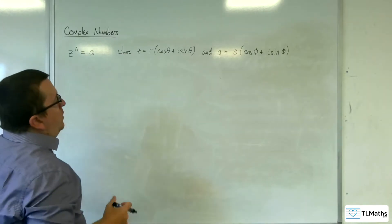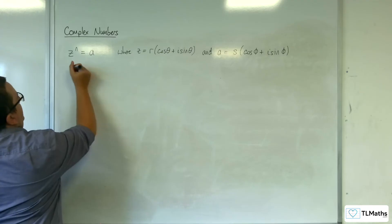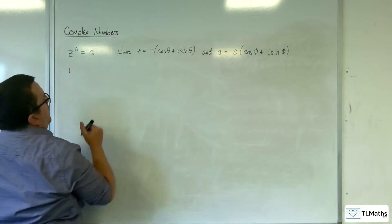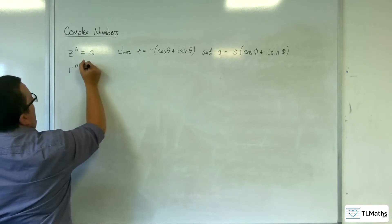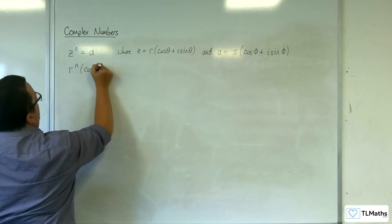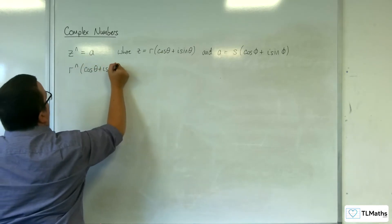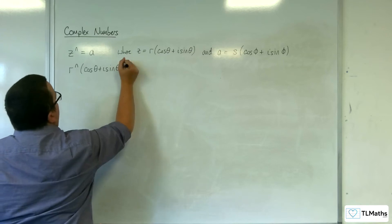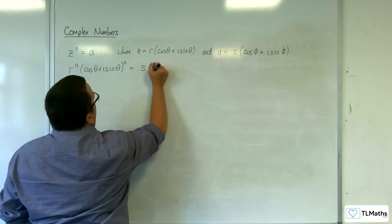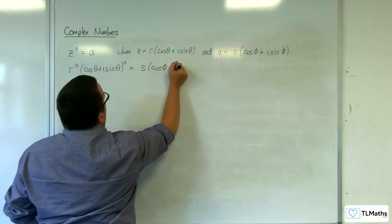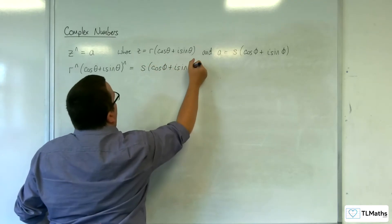So what we would be saying then is that we would have r, all of this to the power of n, so r to the n cosine theta plus i sine theta to the power of n is equal to s cosine phi plus i sine phi.